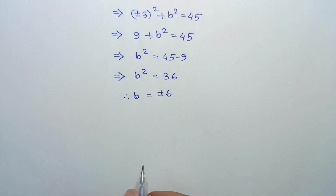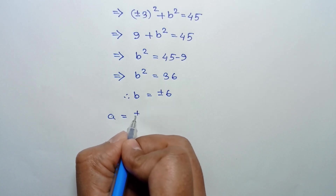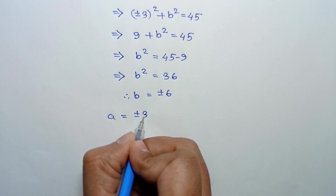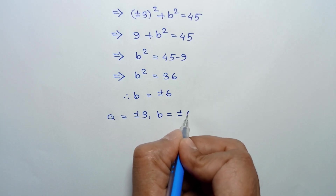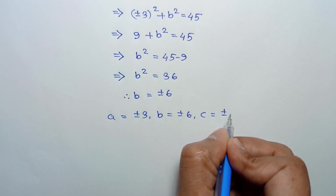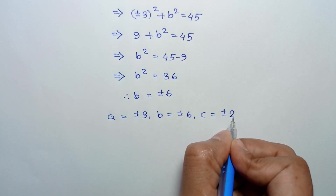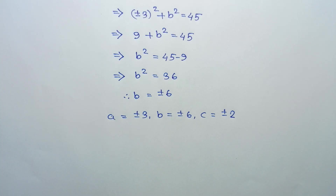So we found that a equals plus or minus 3, b equals plus or minus 6, and c equals plus or minus 2. This is the solution to the given equations. If you like this video, please subscribe to my channel. Thanks for watching.